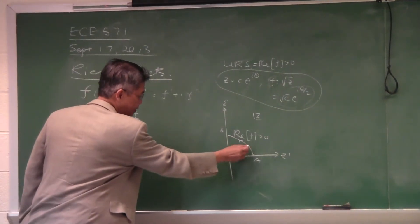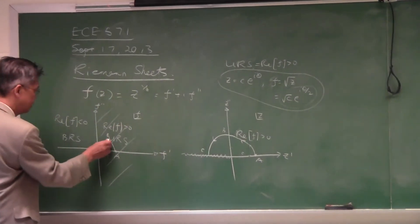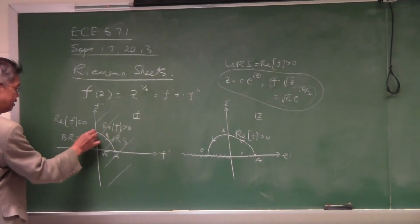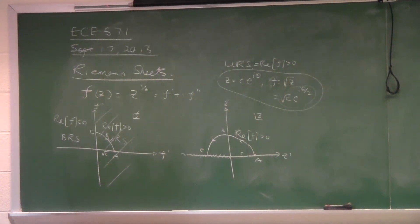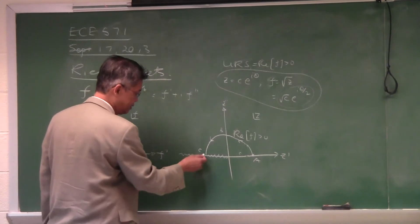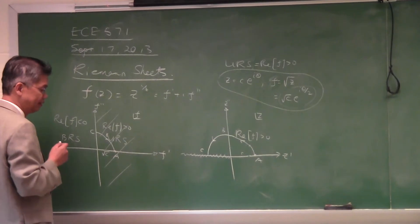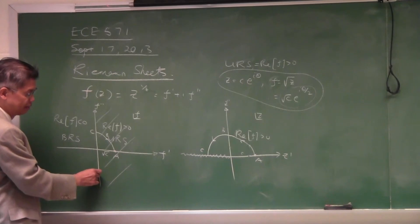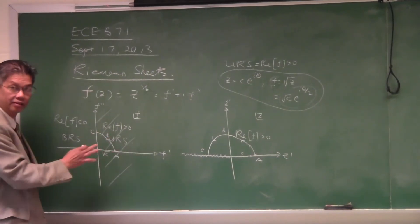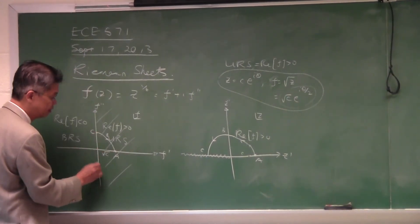And then if you keep marching in this direction, you go to point c and map to point c there. That's an important juncture — you encounter a branch cut on the other complex z plane. You have two choices. One choice is to jump across the branch cut, but if you do that, you face a functional discontinuity, which is no good.